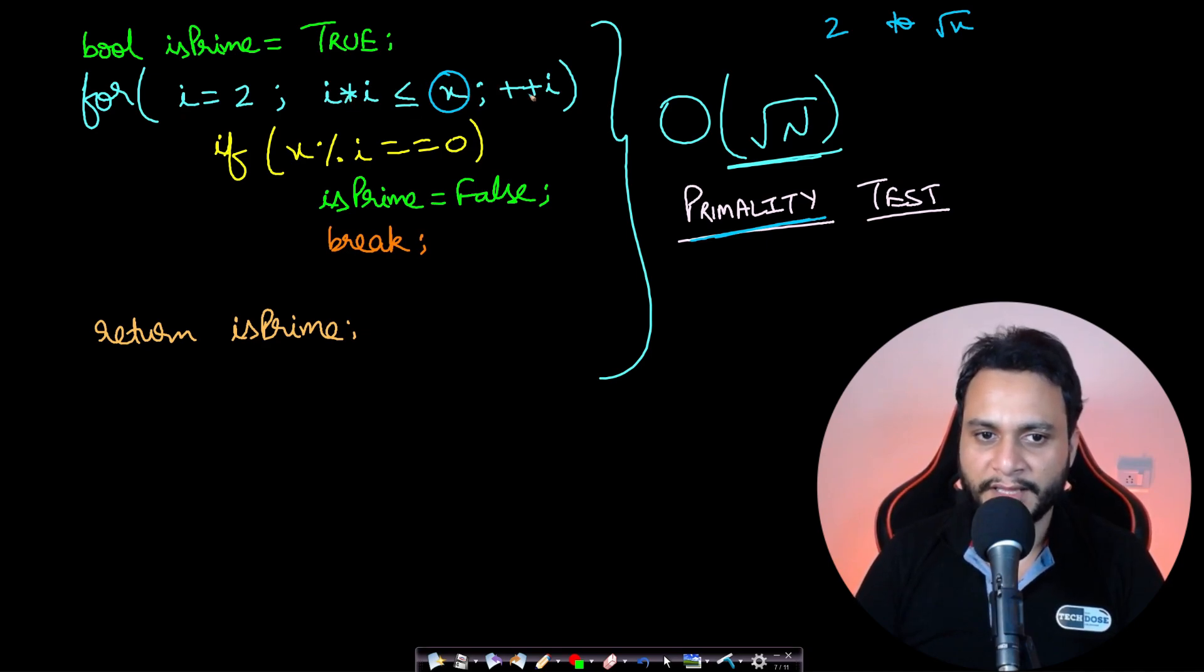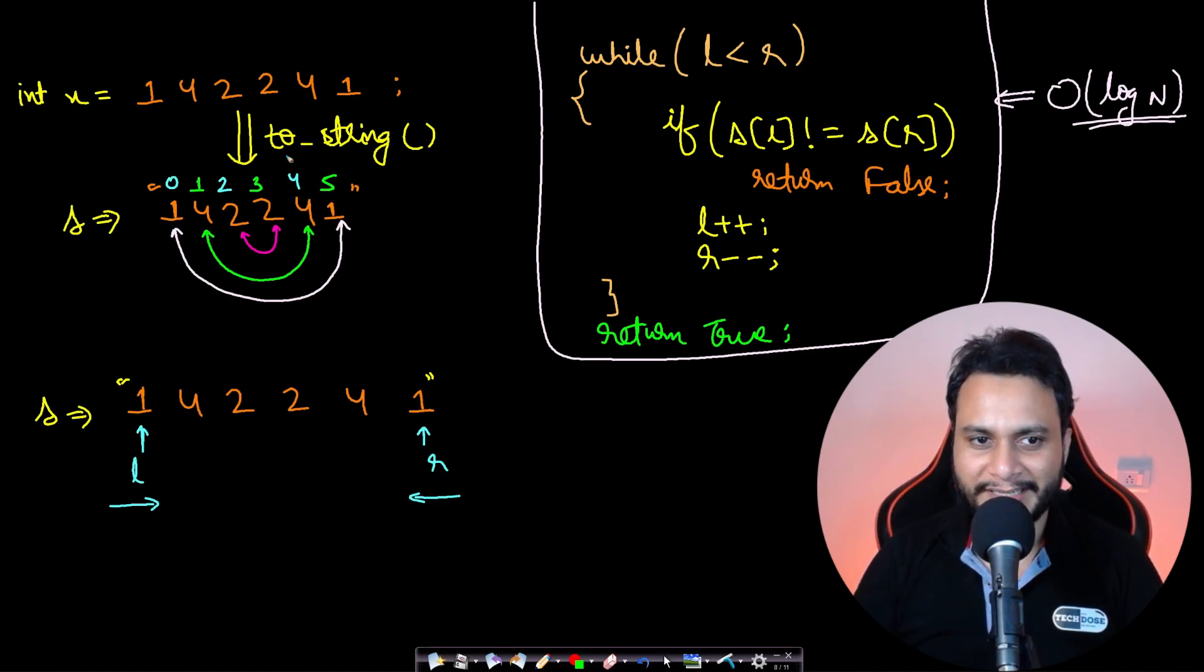You can write it as i equals 2 to i times i less than equals to x, which is basically going till square root of x in steps of size 1. If any number can divide the given number x, then it's a non-prime number. This can be done in O(√n) time.